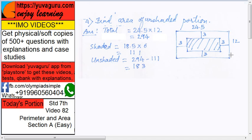Now this is 12, then this 3 gone, this 3 gone. So what remains? 6. So 18.5 into 6, that is 111.